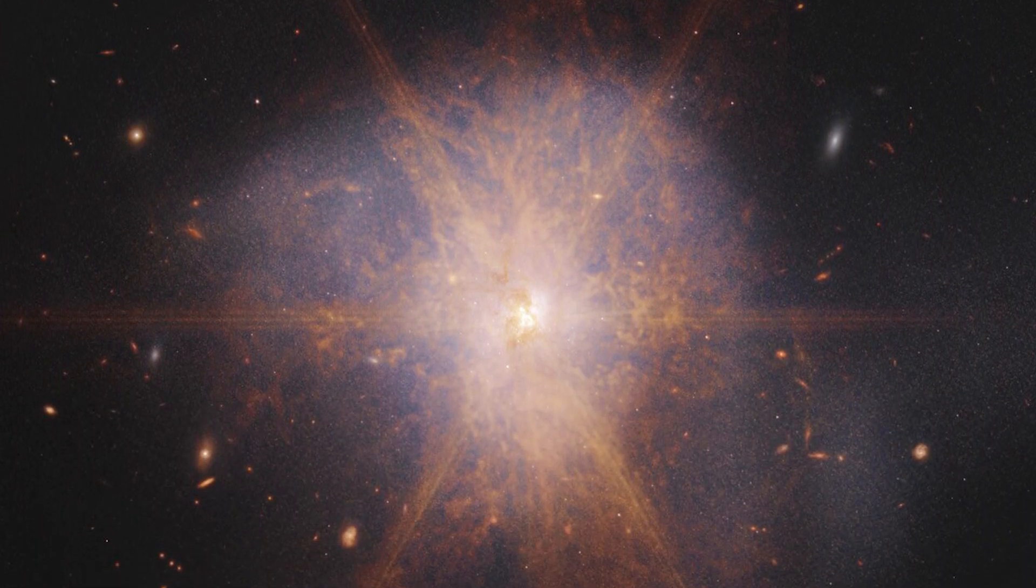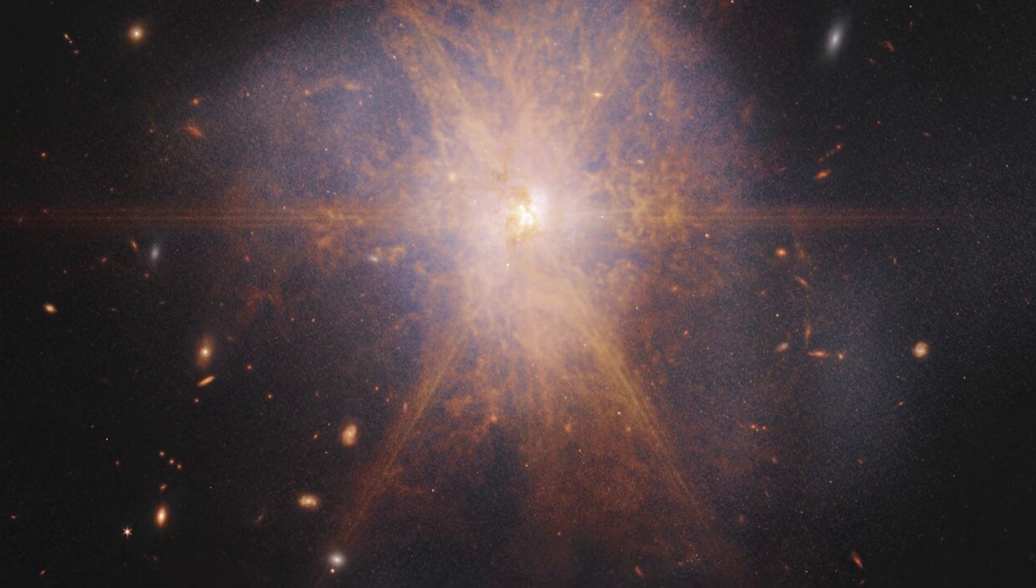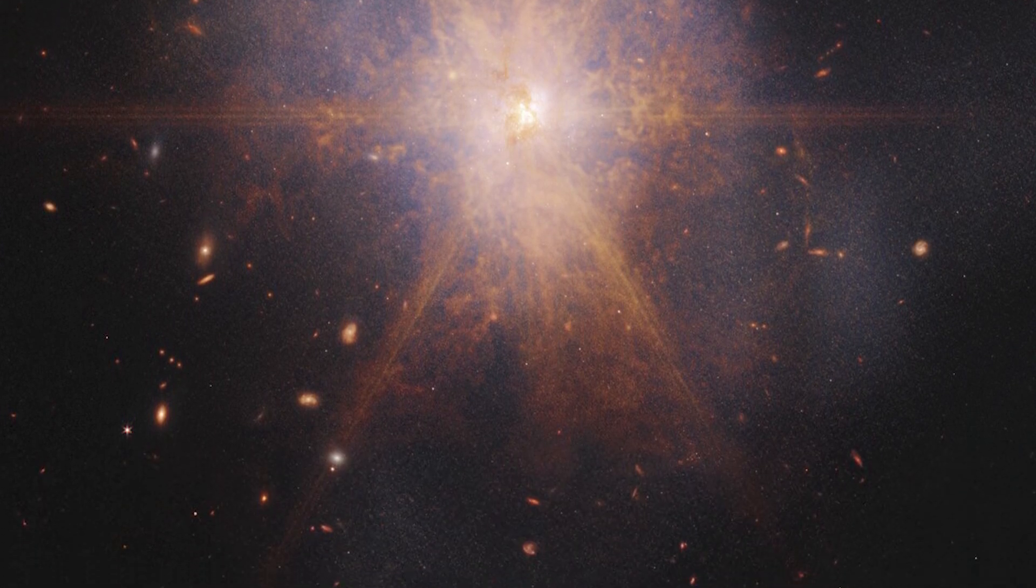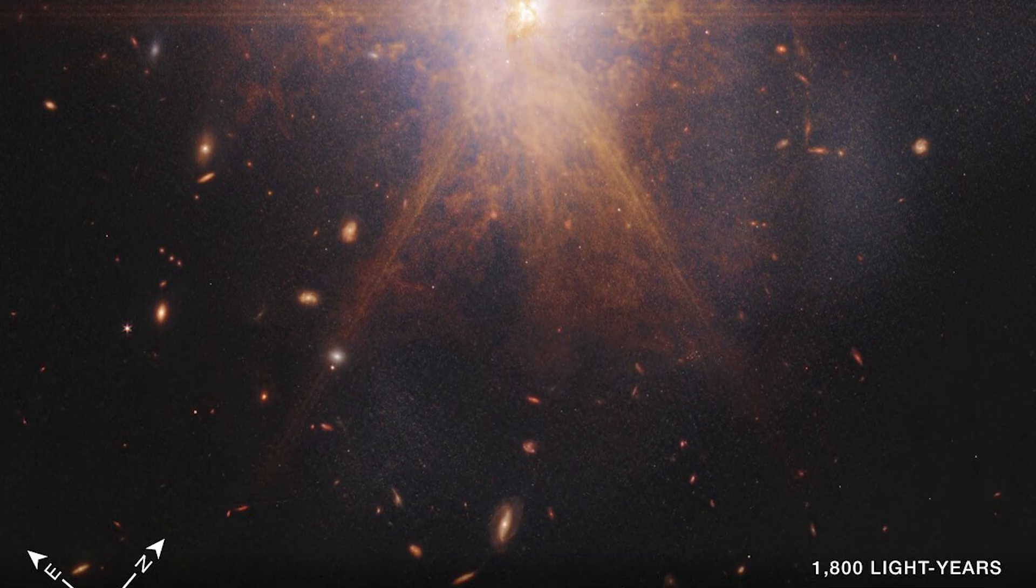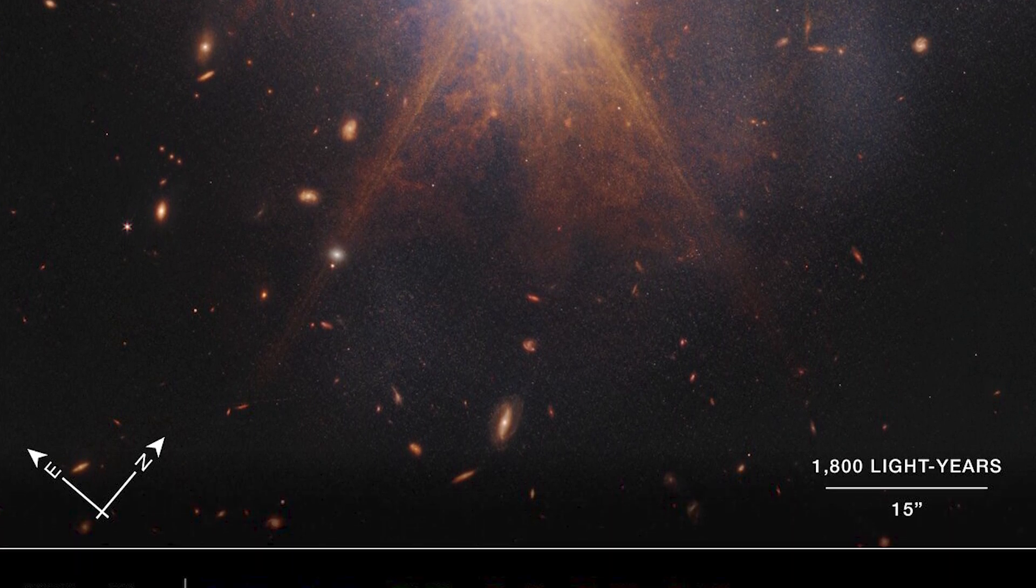When two spiral galaxies merge, the phenomenon known as ARP 220 shines brightest in the infrared, making it perfect for observation by the James Webb Space Telescope.